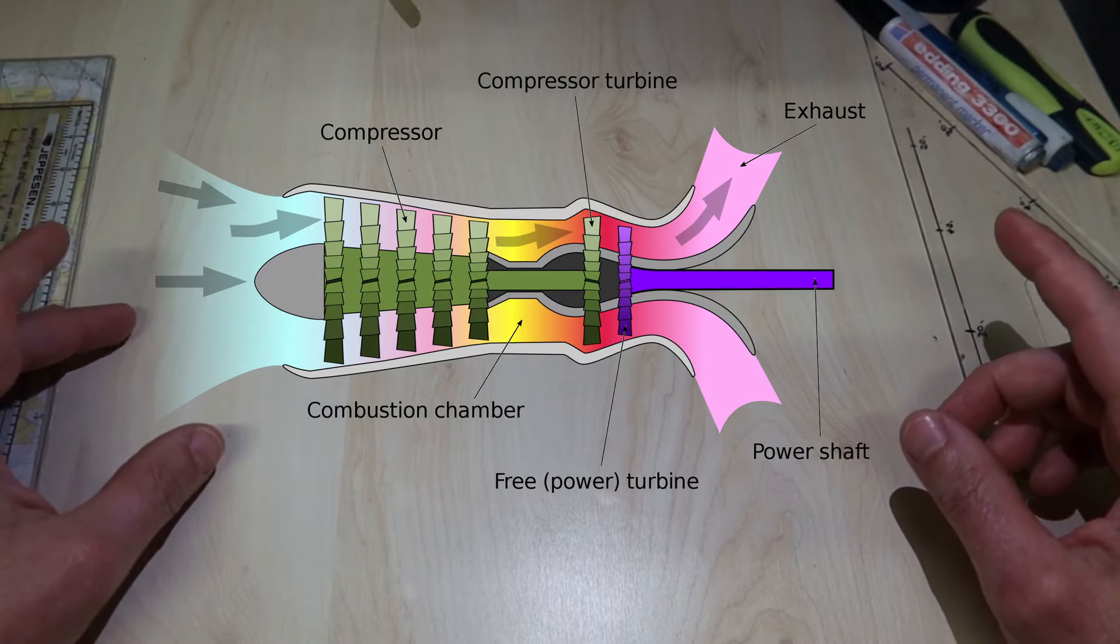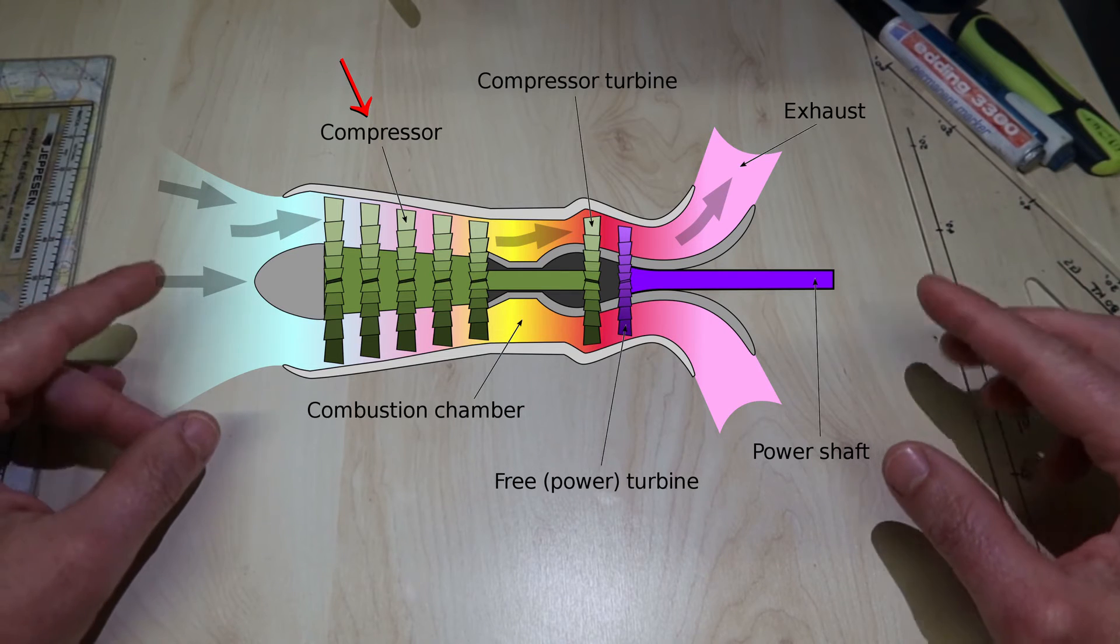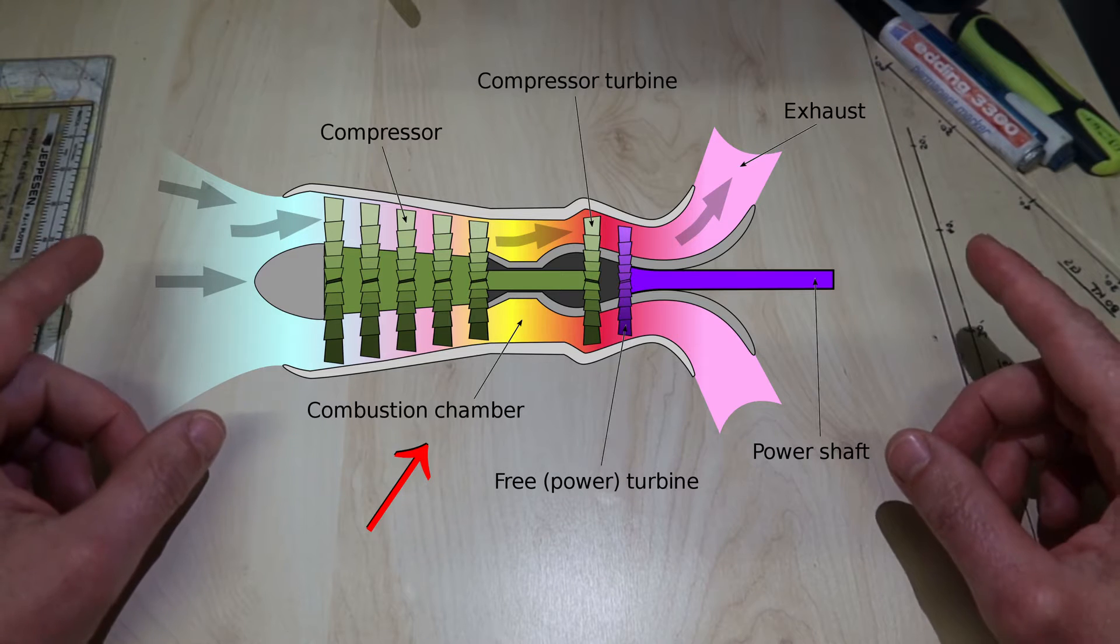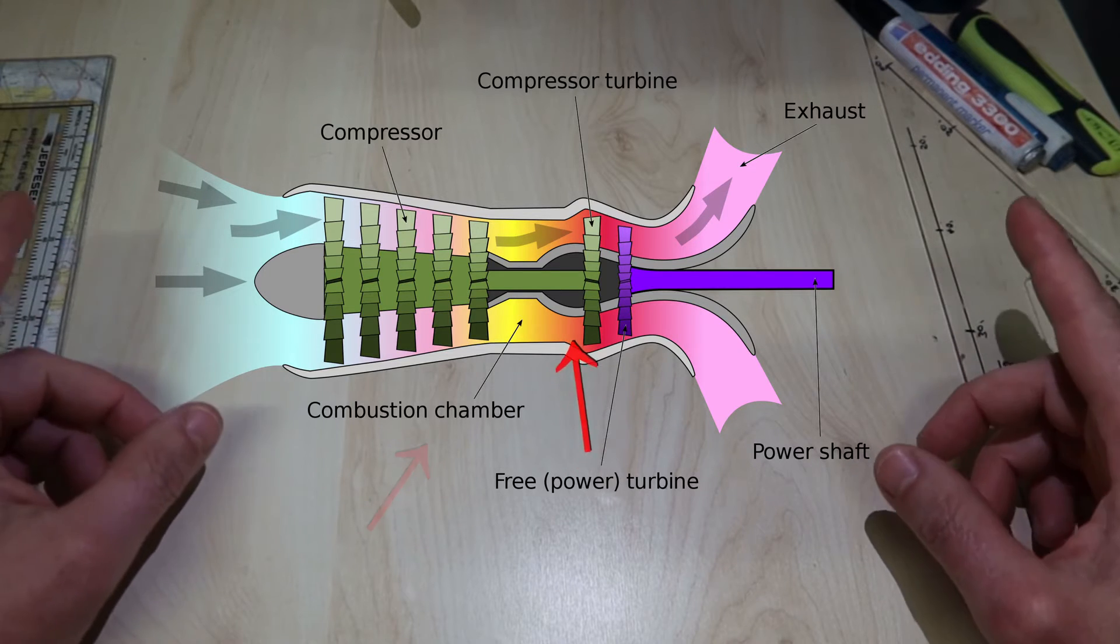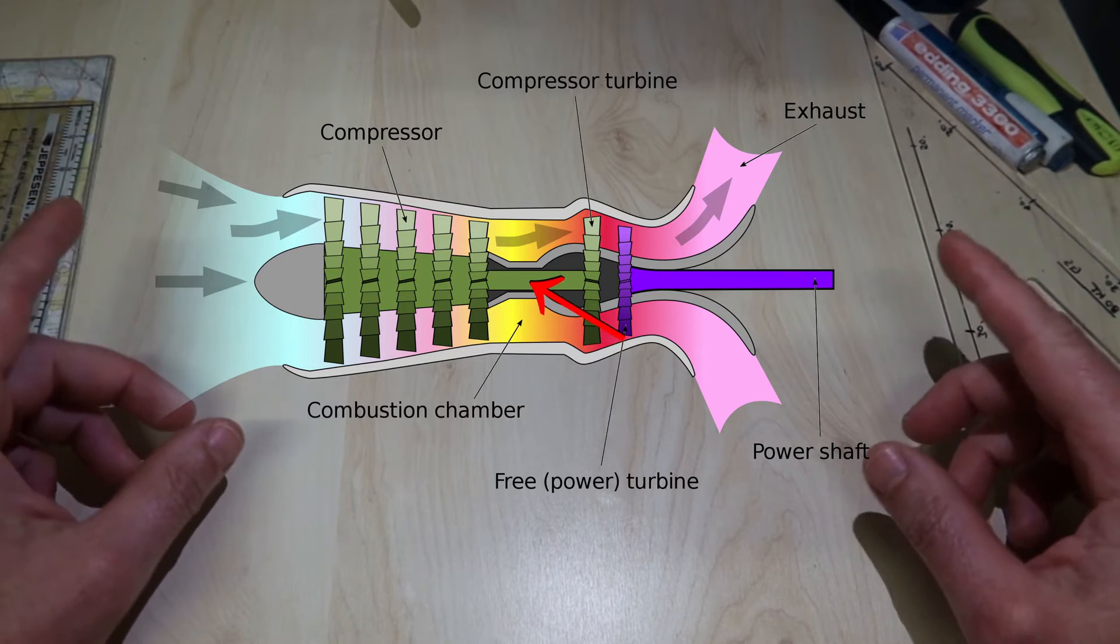The gas generator is effectively a jet engine with a compressor system at the front, combustion chambers to burn the compressed air fuel mixture, and a turbine at the back end which is connected to a shaft to drive the compressor.